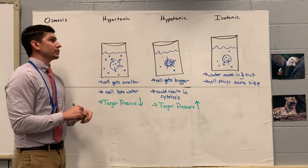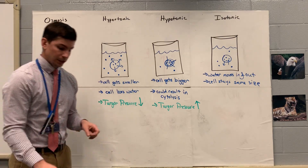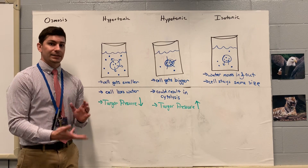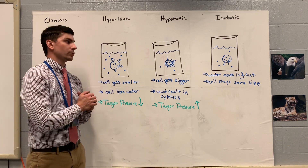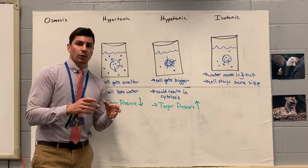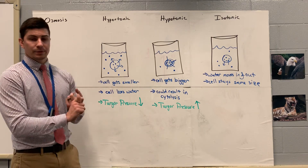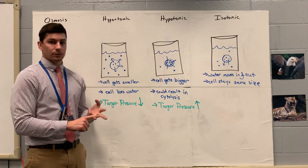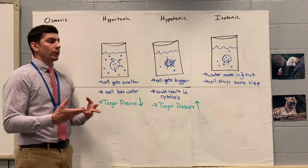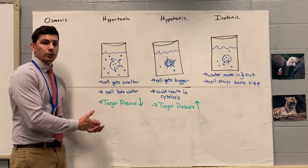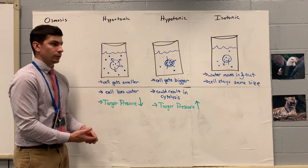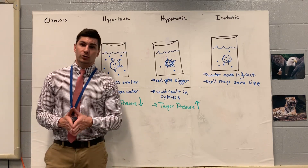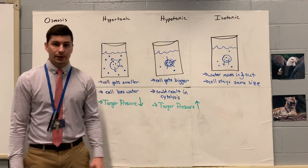That's pretty much it with osmosis, guys. Just make sure you know we're only moving solvent — only water — in these examples. For the other types: passive diffusion, facilitated diffusion, and active transport, we are moving our solute particles. Those move the solute; osmosis only moves the solvent. That's the end of module one, guys. We'll start module two in the next video. Thank you.